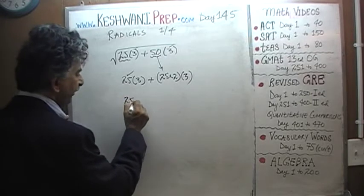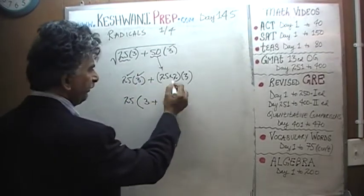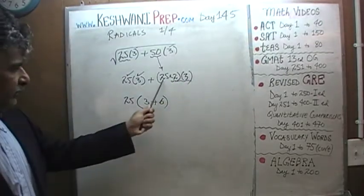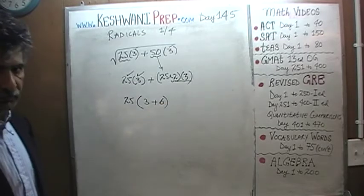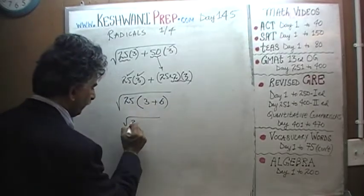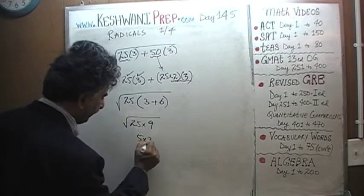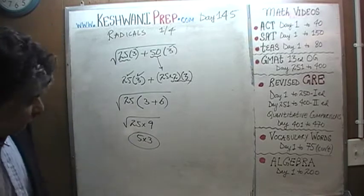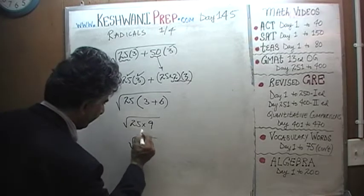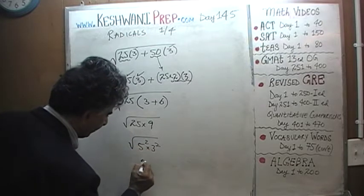Now we take 25 as a common factor. From the first term we are left with 3, and from the second term we are left with 2 times 3, which is 6. So we have 25 times (3 + 6), which is 25 times 9. The square root of 25 times 9 is simply 5 times 3, because now they are both perfect squares: 5 squared times 3 squared.